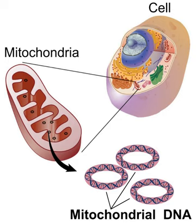Nuclear and mitochondrial DNA are thought to be of separate evolutionary origin, with the mtDNA being derived from the circular genomes of the bacteria that were engulfed by the early ancestors of today's eukaryotic cells. This theory is called the endosymbiotic theory. Each mitochondrion is estimated to contain 2 to 10 mtDNA copies.